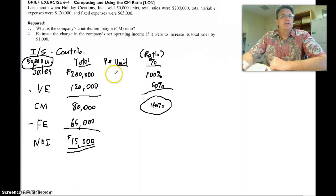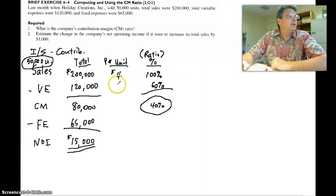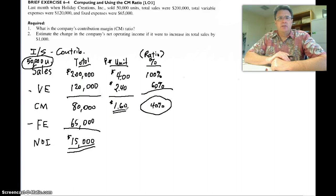Did you guys figure out your per unit? $200,000 divided by 50,000 units. That looks like $4 per unit. $120,000 divided by 50,000. I'm pretty sure that's $2.40. Maybe I should put the cents on here as well.